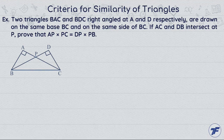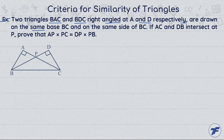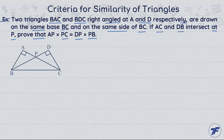Let us solve the next question. Two triangles BAC and triangle BDC, right angled at A and D respectively, are drawn on the same base BC and on the same side of BC. If AC and BD intersect at P, prove that AP into PC equals DP into PB.